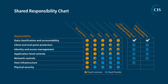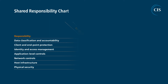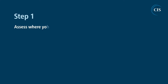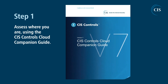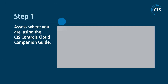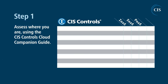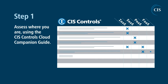Achieving your portion of the shared responsibility model as a cloud consumer is sometimes easier said than done. Here are three steps to help you meet those expectations. Step 1: Assess where you are using the CIS Controls Cloud Companion Guide. This guide provides direction for as-a-service cloud environments and offers guidance to assess your cyber hygiene.